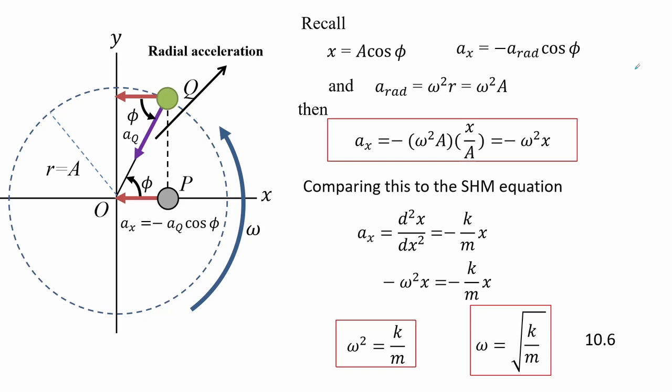Here we show the derivation of angular frequency using the extracted values for position and acceleration. Substituting the expression for radial acceleration into the acceleration along X, we get an expression relating acceleration to angular frequency. Comparing this to simple harmonic motion, we get an expression for the angular frequency equal to the square root of the ratio of spring constant K over mass M.